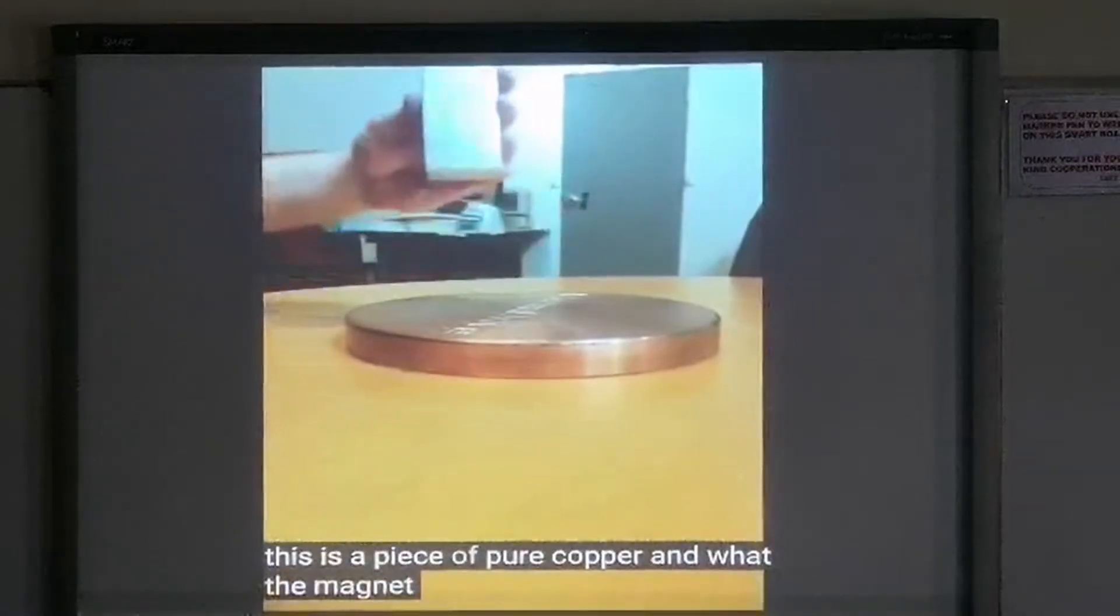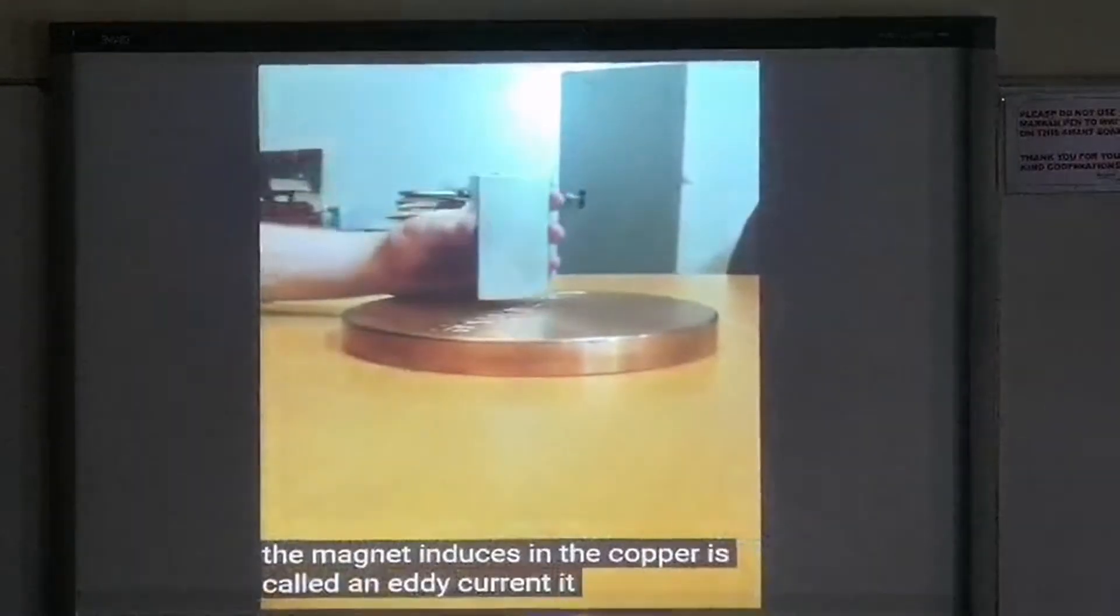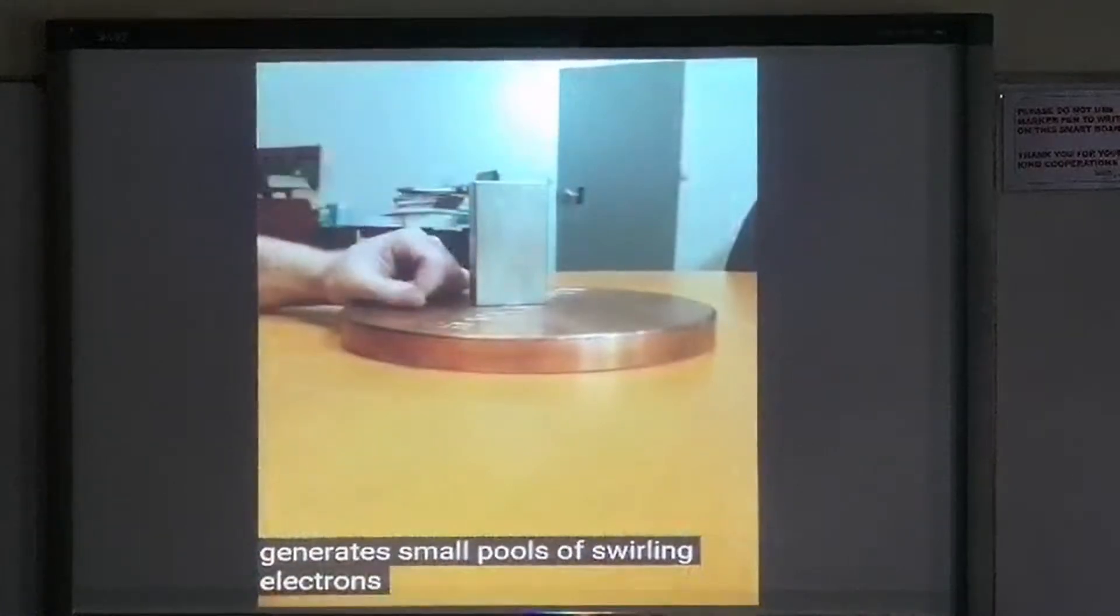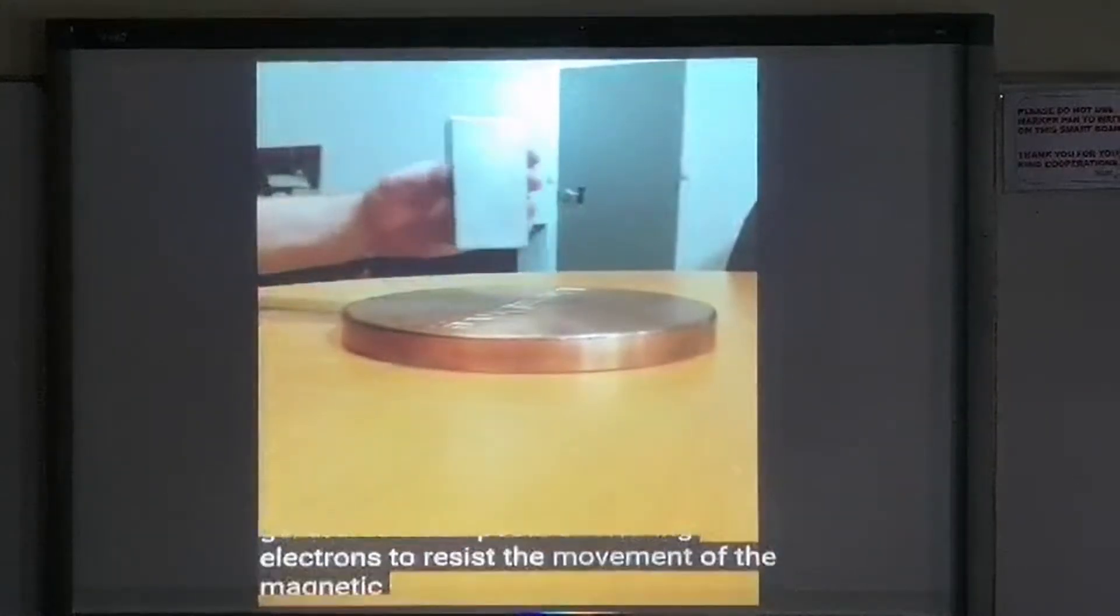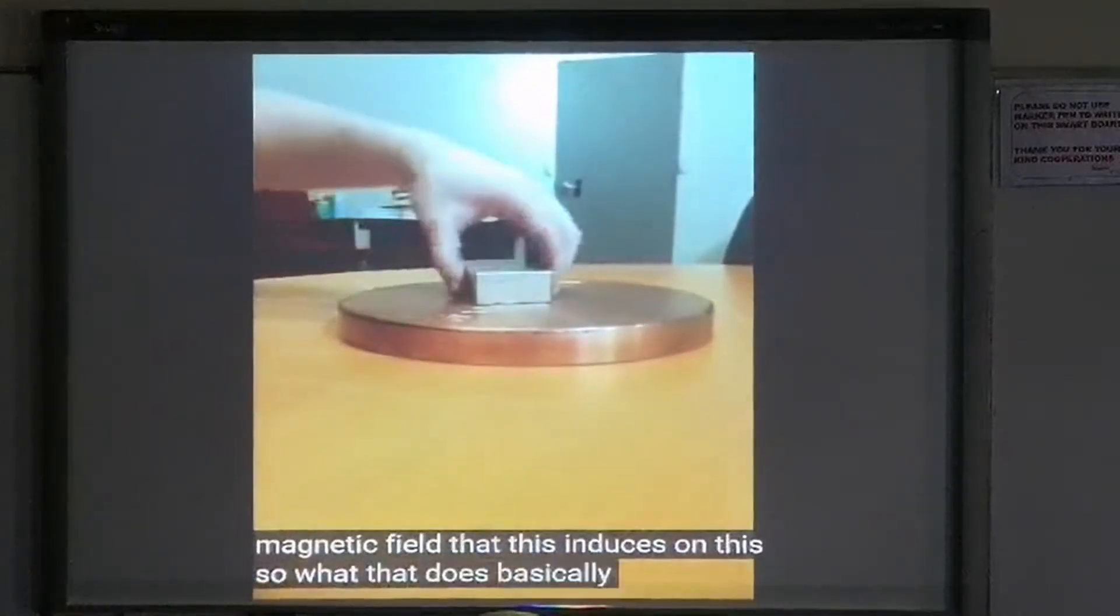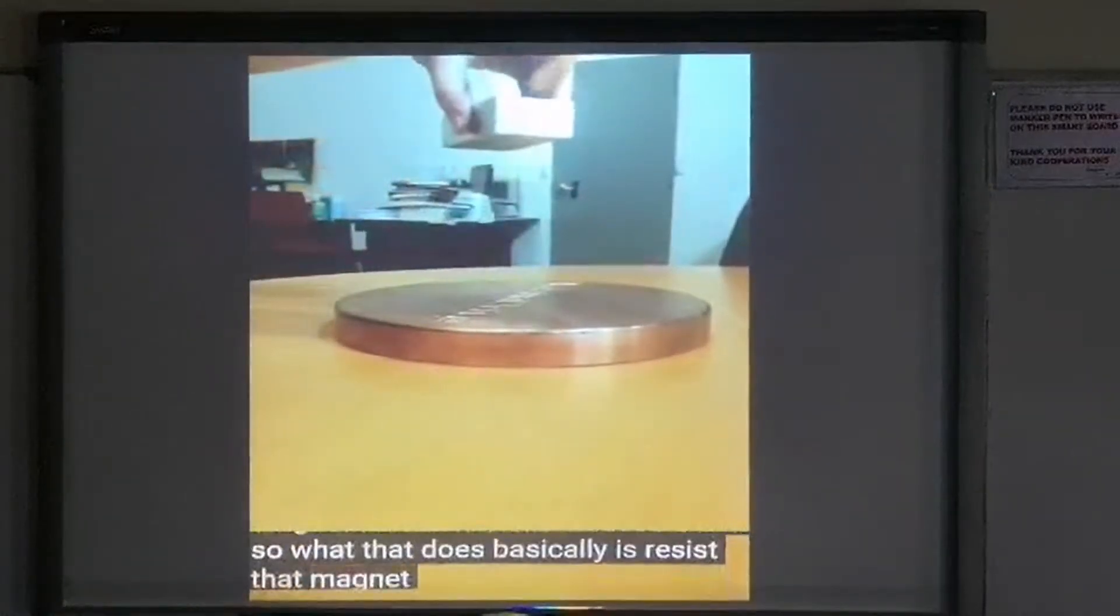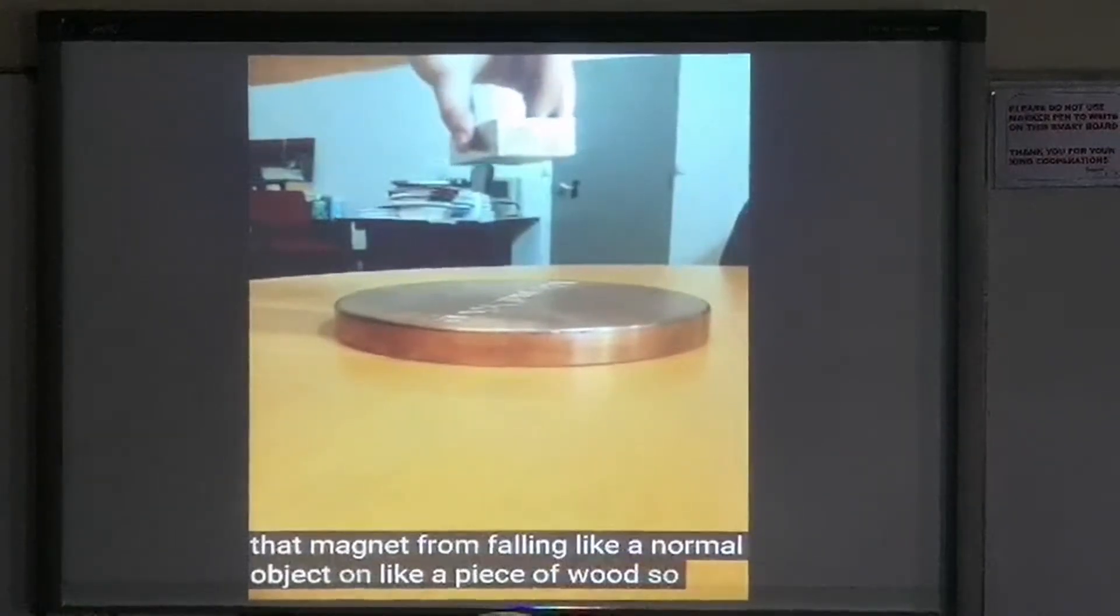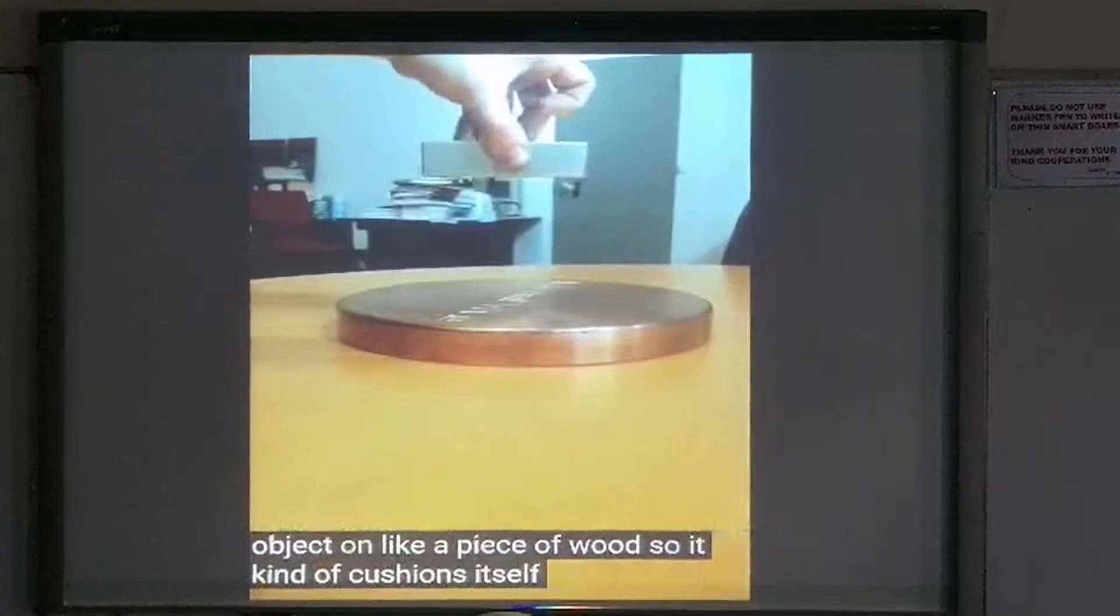And what the magnet induces in the copper is called an eddy current. It basically generates small pools of swirling electrons that resist the movement of the magnetic field that this induces. So what that does basically is resist the magnet from falling like an object would on a piece of wood. So it kind of cushions itself as you can see.